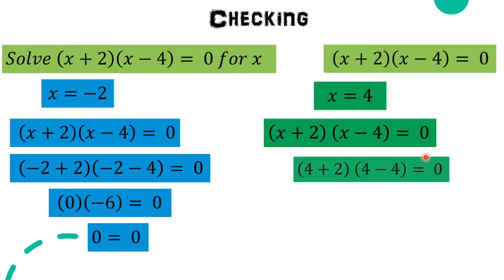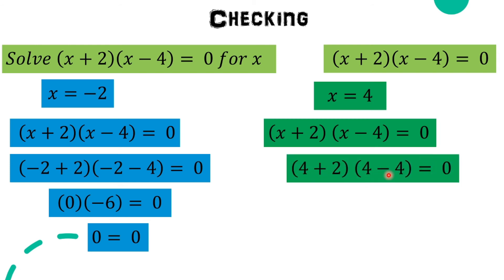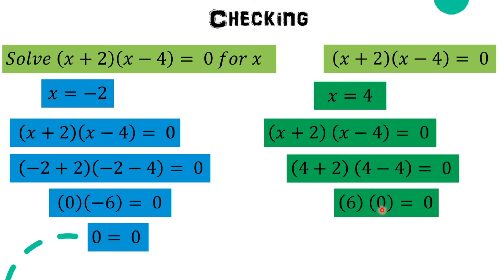Now checking x = 4: (4 + 2)(4 - 4) = 0. Then 4 minus 4 is zero, and we get 6 times zero equals zero. Any number multiplied by zero equals zero. Therefore, x = 4 is correct as a solution.